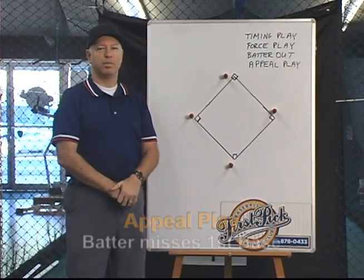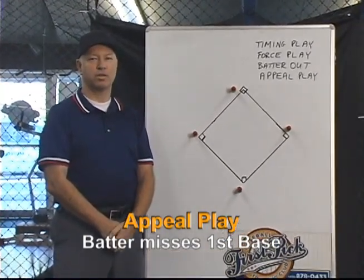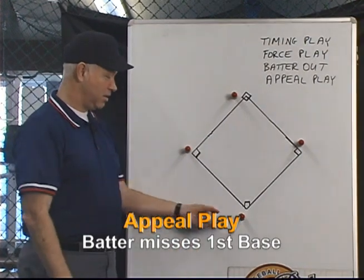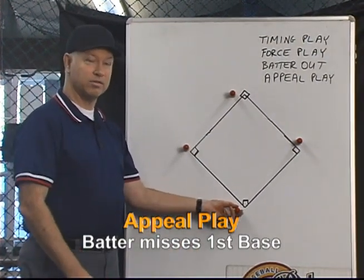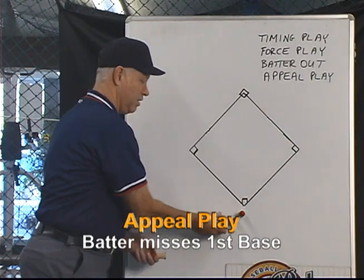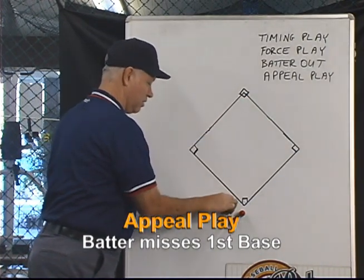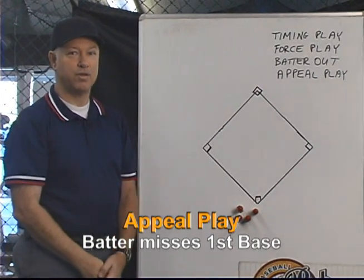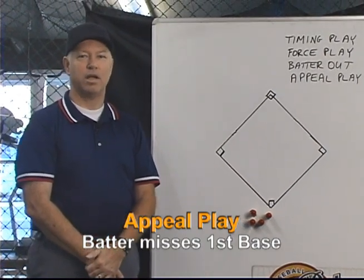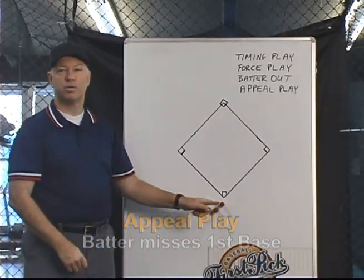In this example we have an appeal play that results in the batter being put out before he touches first base, so no runs can score. The bases are loaded with two outs and the slugger hits a home run over the fence. The first run comes in, the second run comes in, the third run comes in. But he, in his excitement, fails to touch first base. Everybody's congratulating each other, and the defense appeals that he missed first base. That means he was out before he touched first base, and no run can score if the third out is made before the batter reaches first base. So none of these runs would score and the inning is over.